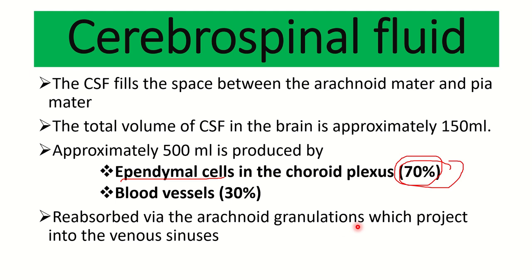The CSF is reabsorbed via arachnoid granulations, which project into the venous sinuses. These arachnoid granulations invaginate into the venous sinuses, through which the cerebrospinal fluid is reabsorbed and enters the systemic circulation. The CSF is replaced from the lymphoid tissue, as lymphoid tissue is absent from the cerebrospinal fluid.